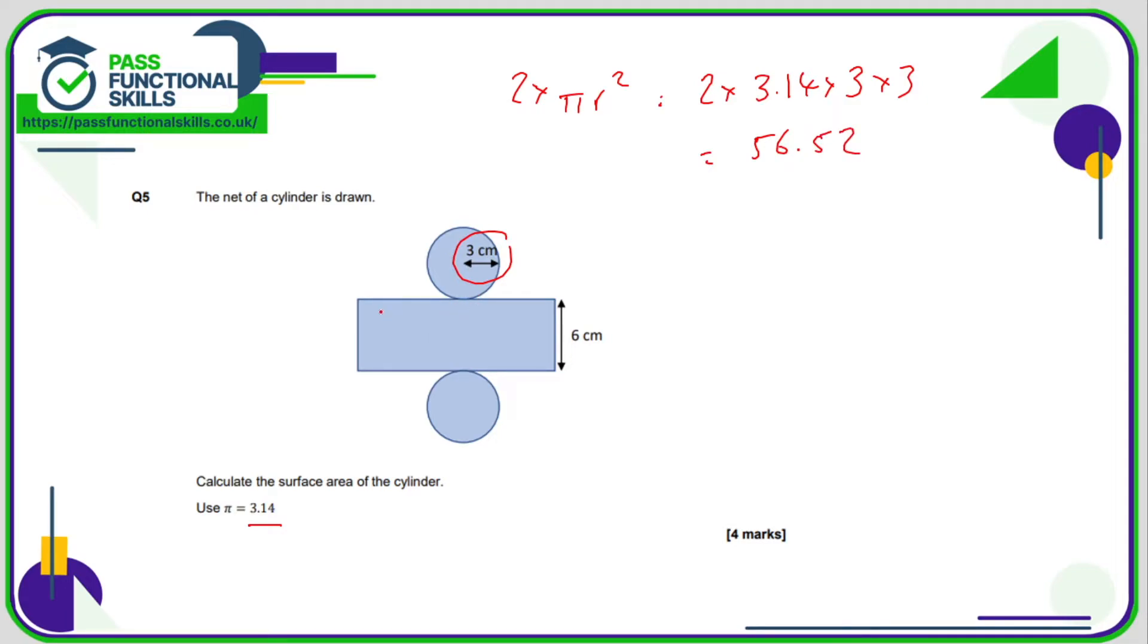Now we need to work out the area of this rectangle here. So we know it's going to be six, but it's going to be six multiplied by what? Well if this is the net of a cylinder, then this dimension here will wrap all around this circle, so it's the circumference of a circle. And the formula for the circumference of a circle is pi times the diameter, so it's going to be six times by 3.14 times by, or the radius is three so the diameter is six. Six times 3.14 times six comes to 113.04.